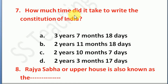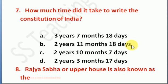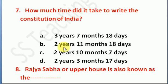Next question: how much time did it take to write the Constitution of India? Option A: 3 years 7 months and 18 days, Option B: 2 years 11 months and 18 days, Option C: 2 years 10 months and 7 days, Option D: 2 years 3 months and 17 days. The right answer is Option B — 2 years 11 months and 18 days.